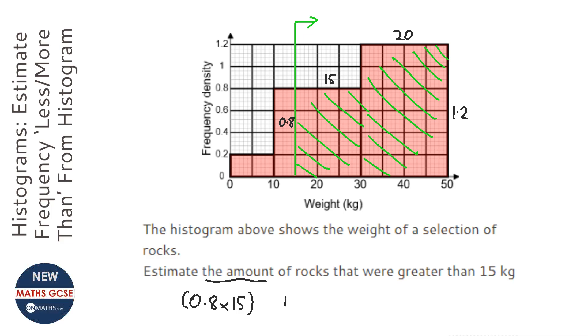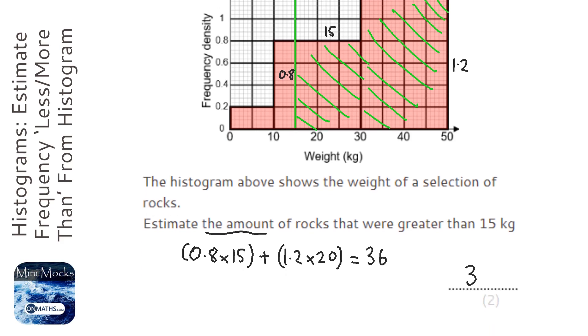So I'm going to do 1.2 times 20, and then I'm just going to add those frequencies together. I've got a calculator handy, so I'm going to use it. I'm going to type that in, and it gives me the answer of 36. So my answer is 36.